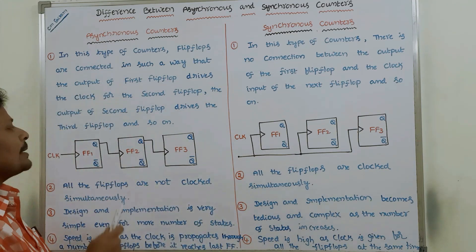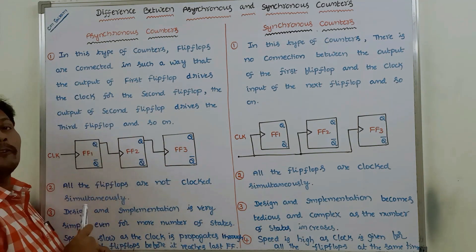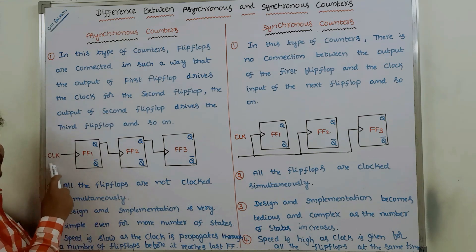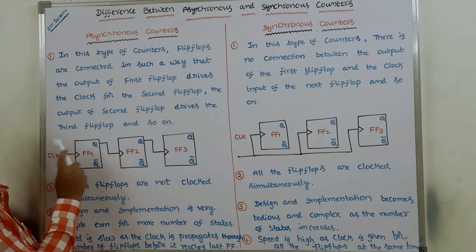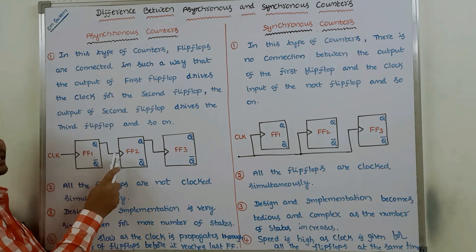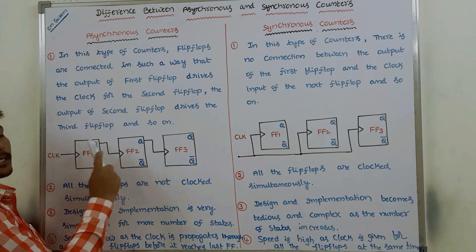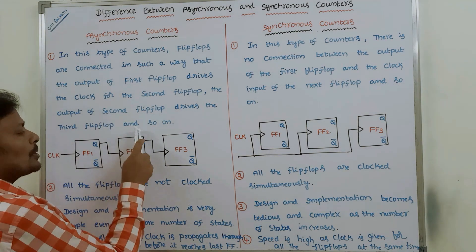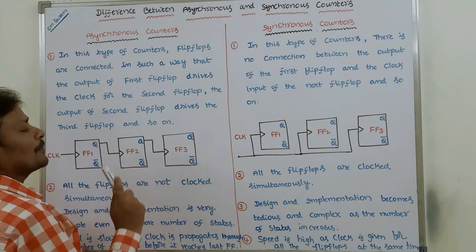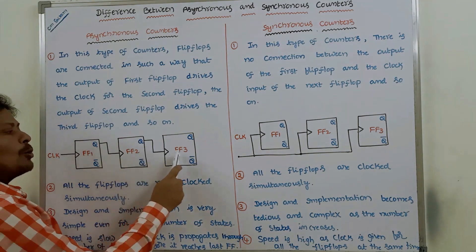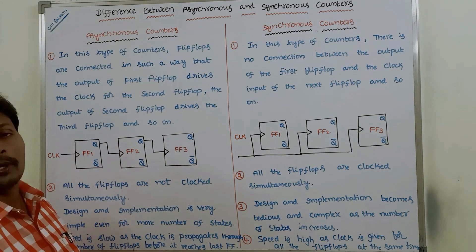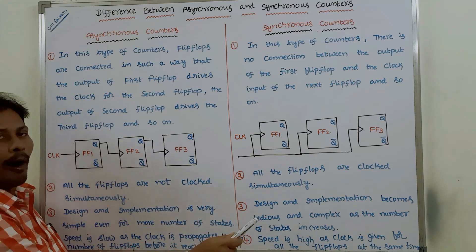In asynchronous counters, the clock pulse is given to the first flip-flop, then the output of the first flip-flop is connected to the clock input of the second flip-flop, the output of the second is connected to the third, the output of the third is connected to the clock input of the fourth, and so on.